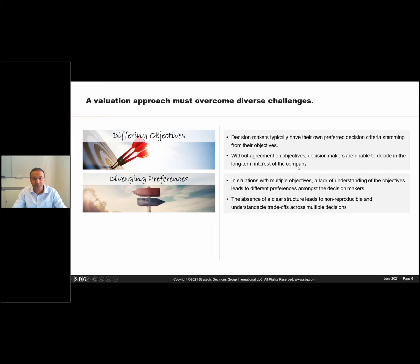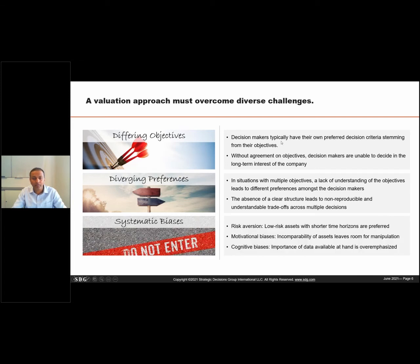Second, stating the objectives alone is not sufficient. You need to have an agreed order of preference, as detailed as possible. There's no reason, for example, in agreeing that sustainability is an important objective when in reality decision makers would not sacrifice any financial metric for an increase in sustainability. And finally, systemic biases — distortions that mislead our decisions. Biases are categorized into motivational and cognitive biases. Motivational biases occur when a project team becomes too attached to its idea, overestimating chances and overlooking obstacles. Cognitive biases result from limited cognitive capabilities leading to systemic distortions.